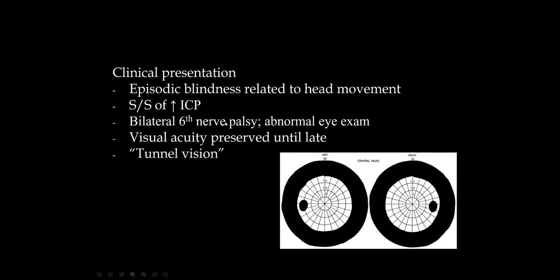Of all cranial nerves likely to be affected with increased intracranial pressure outside of the optic nerve, it would be the sixth nerve, which has a very long course. They may have a bilateral sixth nerve palsy. Visual acuity in papilledema is preserved until late, so you would not want to rely on visual acuity to exclude papilledema. Visual field testing may show tunnel vision — a constriction of vision — and the blind spot is larger in papilledema.